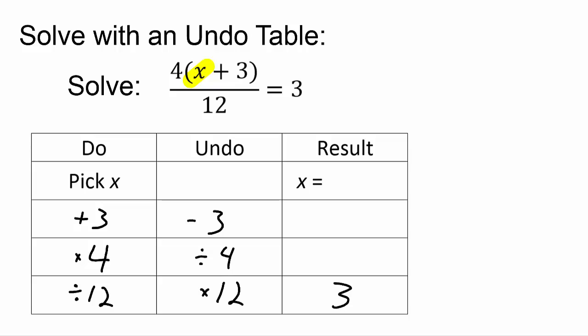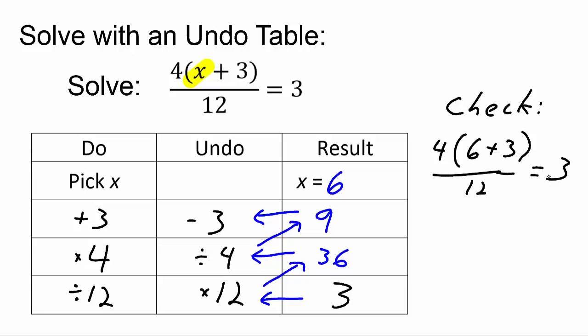To solve for x, we work our way up the undo table. 3 times 12 equals 36. 36 divided by 4 equals 9. 9 minus 3 equals 6. We can check that answer by plugging 6 back into the equation. We always use the order of operations, so we'll do what's inside parentheses first. 6 plus 3 equals 9. 4 times 9 equals 36. And 36 divided by 12 does equal 3.